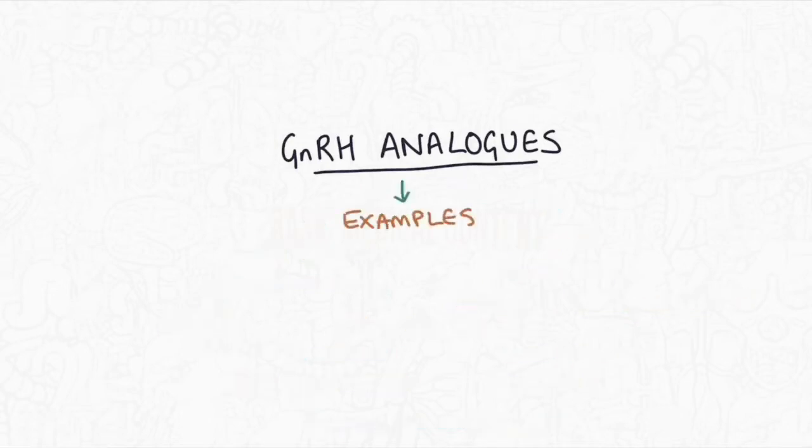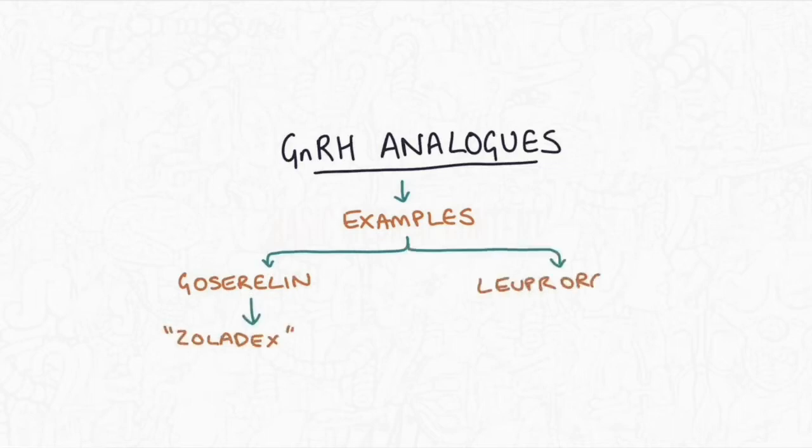Firstly I'll give you a couple of examples of these GnRH analogues. The first one being Goserelin which is under the brand name of Zoladex and the other one is Leuprorelin which is under the brand name of Prostap.